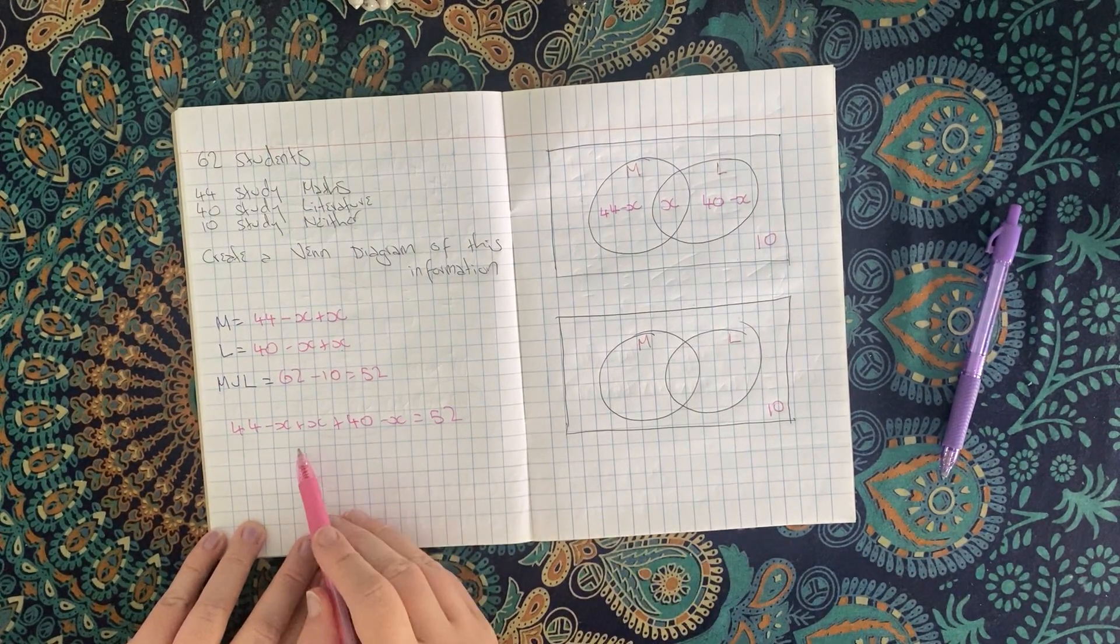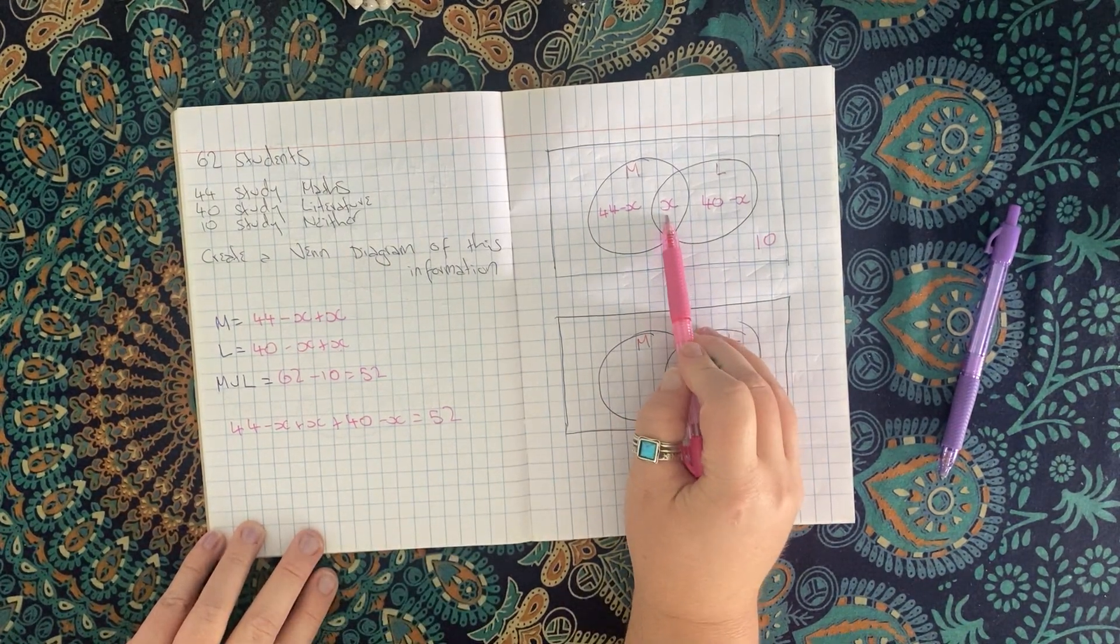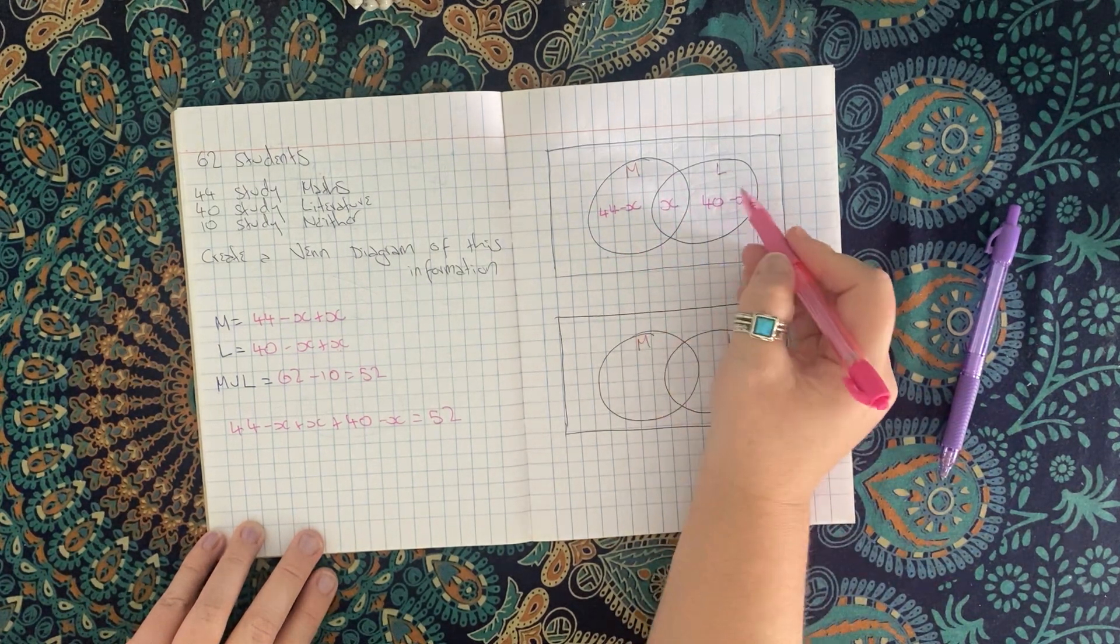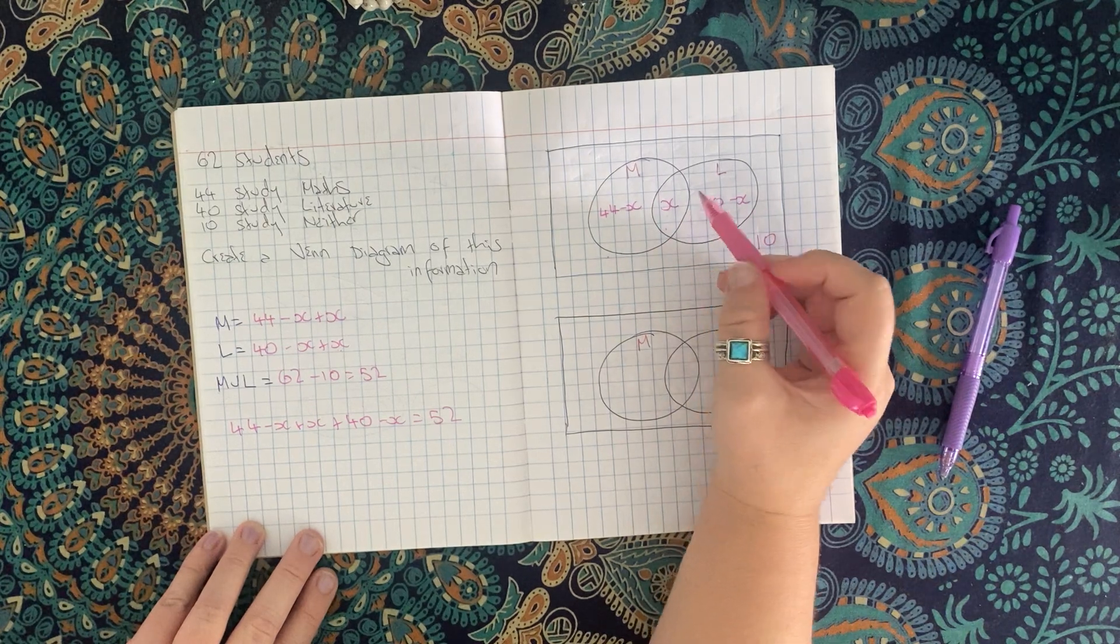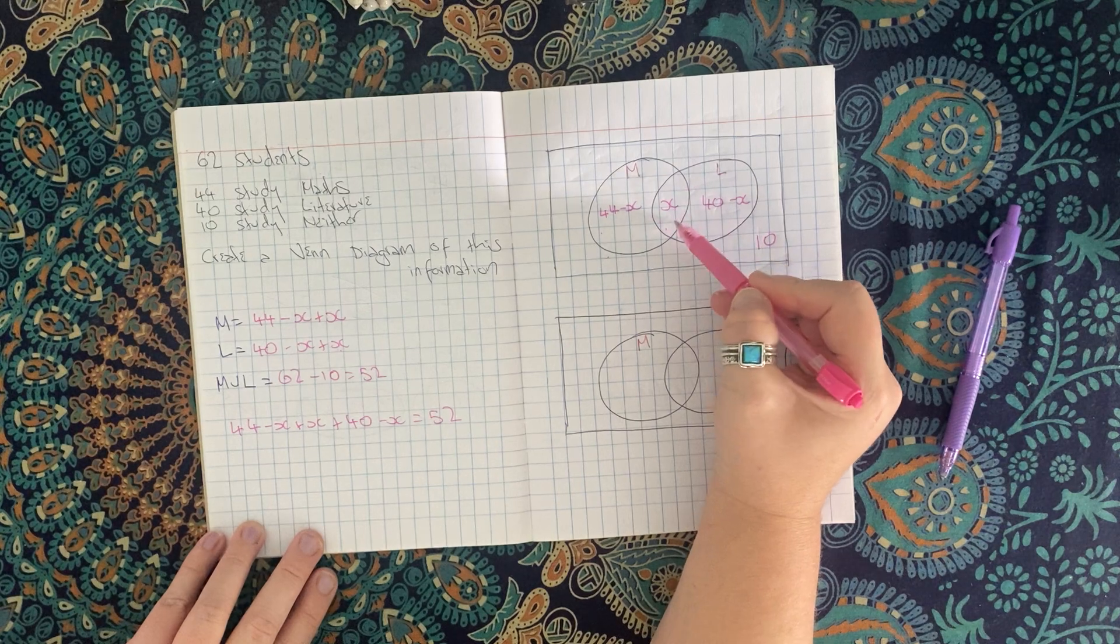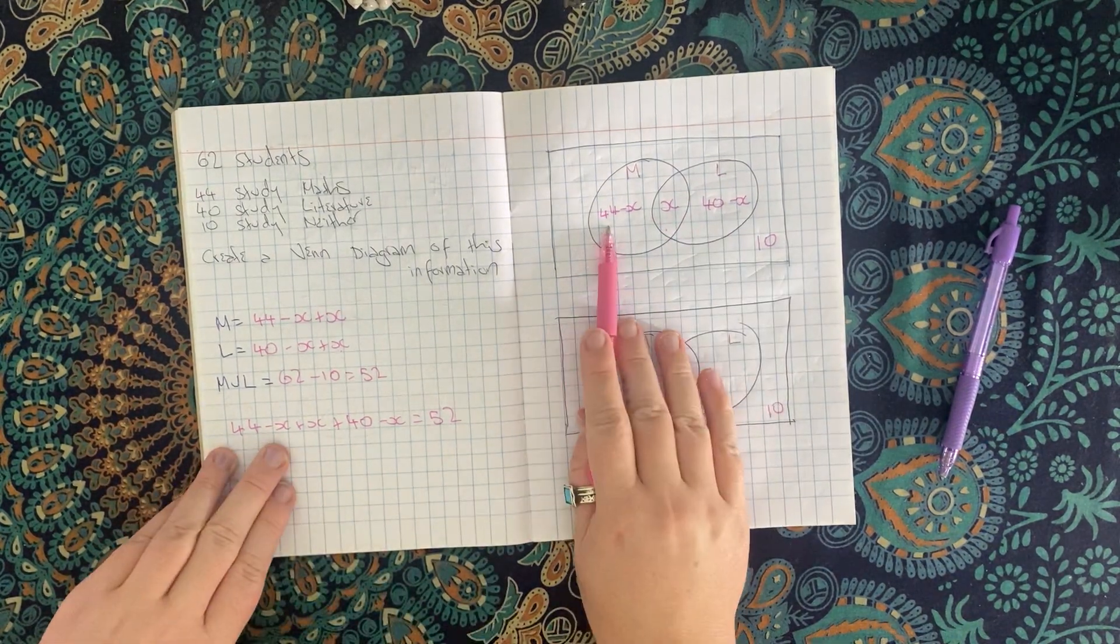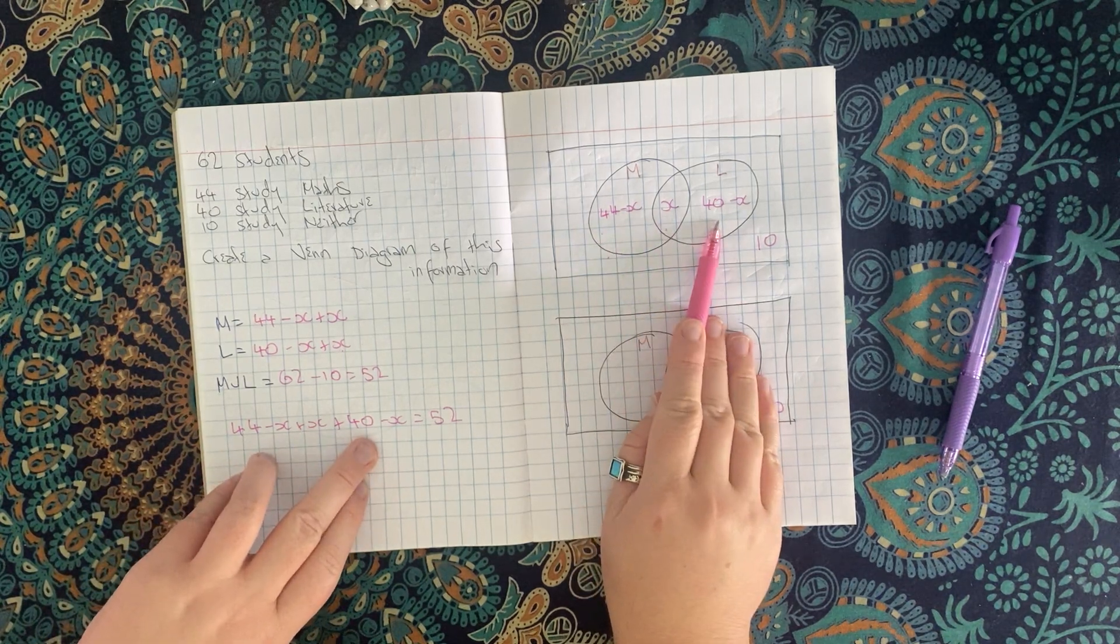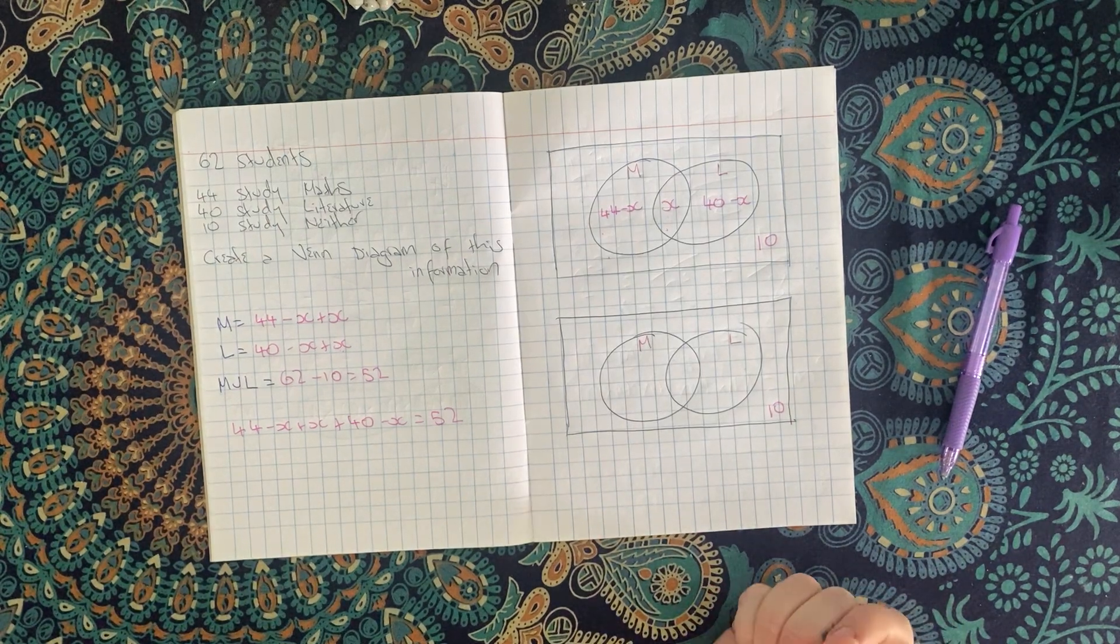But when I put them together to figure out my intersection, I can't count this twice because what I would be doing is saying this bit plus this bit equals 52, and that's not true. It's this bit plus this bit plus this bit equals 52. So that's why I've got 44 minus X plus X plus 40 minus X and together that equals 52. So this is my algebraic equation.